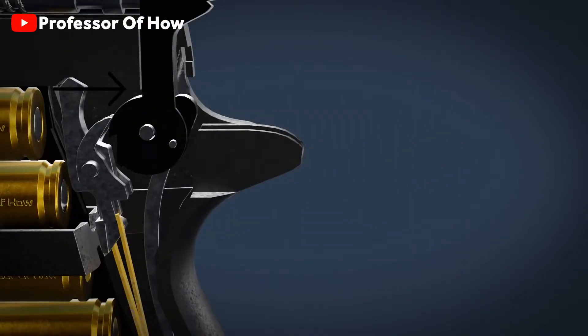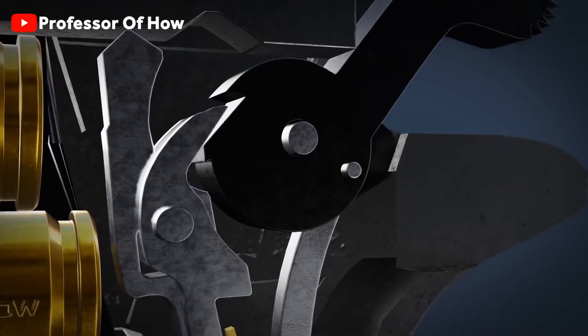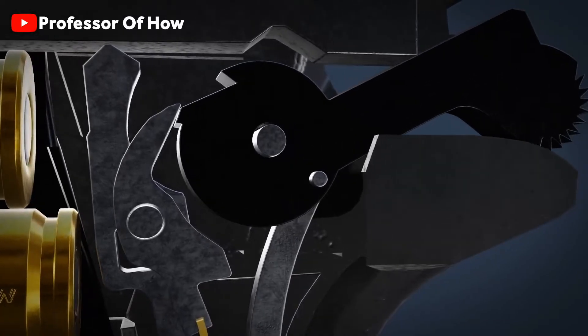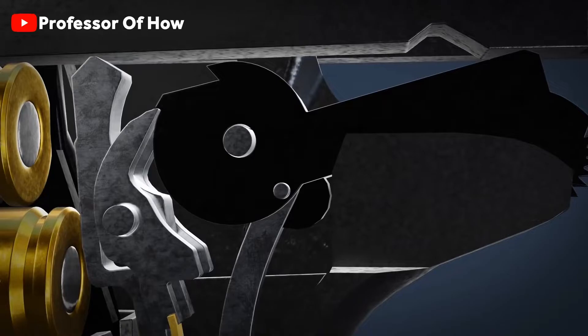Now, what happens is, this leaf spring always tries to keep sear in this direction. Now understand well, when the hammer was rotating because of the slide, at the same time it was also getting engaged with the sear.